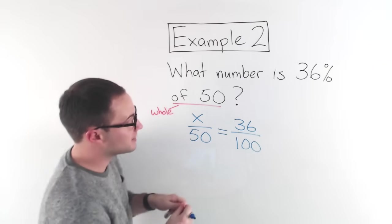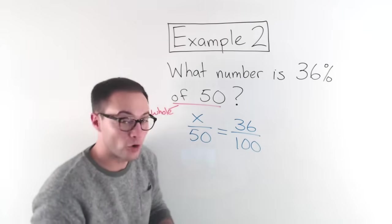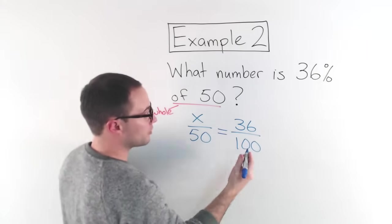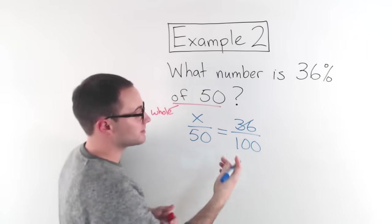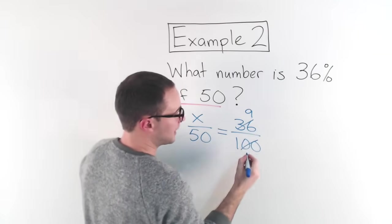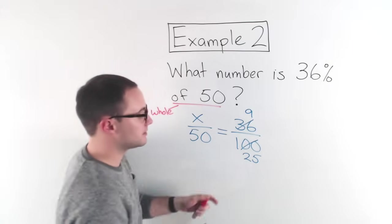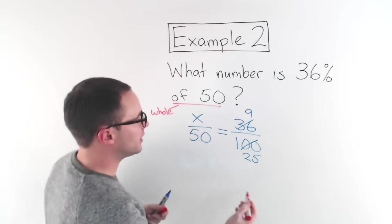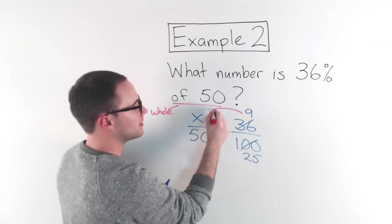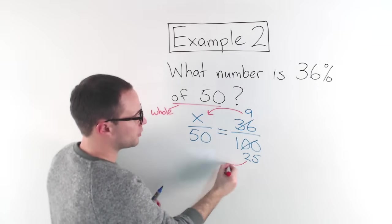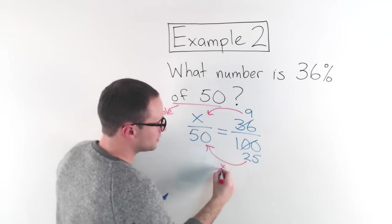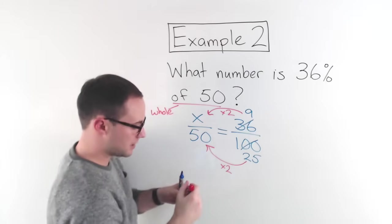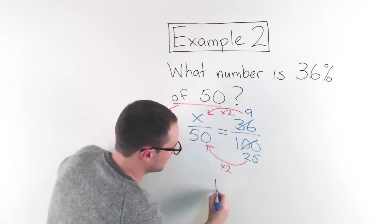36 and 100. Those have common factors, right? Four is a common factor of both, right? Four times nine is 36, four times 25 is a hundred. And now look what happened. Now it's very easy. Remember, I'm trying to get to the variable. So I'm going this direction. Well, 25 times two will give me 50. So nine times two will give me 18.